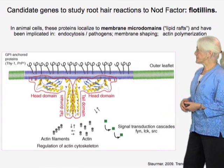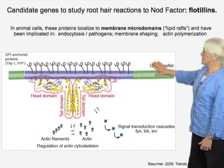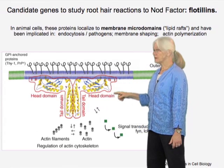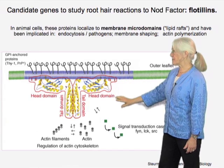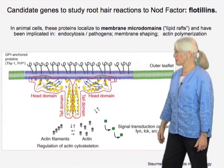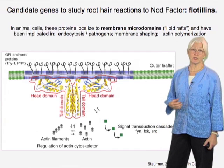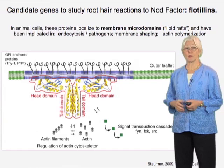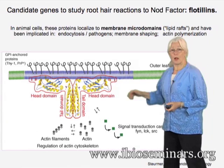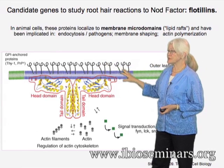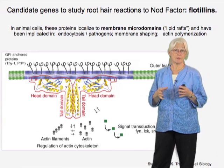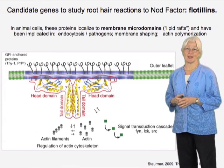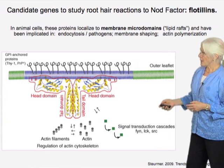What are flotillins? They've been studied widely in animal cells. This diagram shows an animal cell with plasma membrane. Flotillins — outlined in red — have a domain affiliated with the membrane and a tail that is more cytoplasmic. It is thought that they relate to signaling, to endocytosis, and to activity of the actin network within the cell. It's also been demonstrated that these flotillins occur in what are sometimes termed membrane microdomains, also sometimes called lipid rafts.